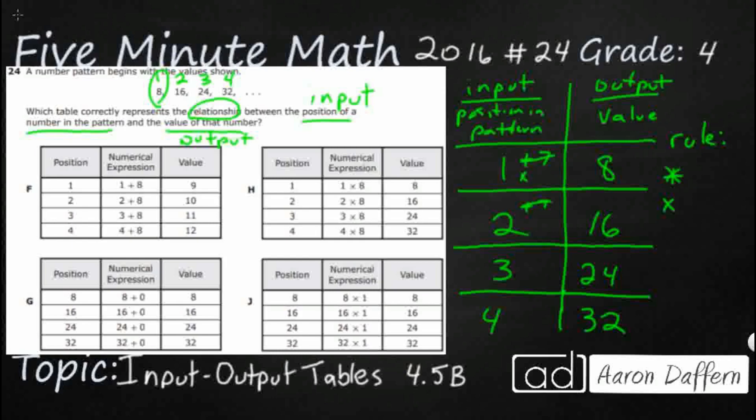So it's not going to be that. It is going to be kind of what we were saying earlier, skip counting by 8, which means that's going to be multiplying. So what if we multiply by 8? 1 times 8 equals 8. 2 times 8 equals 16. 3 times 8 equals 24. 4 times 8 equals 32. Yes, that works. So that is our pattern that we notice: that we are multiplying our position by 8 to get our value.